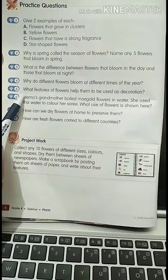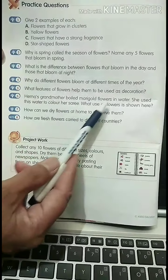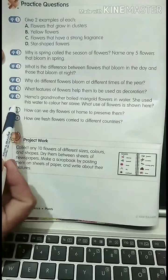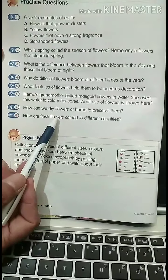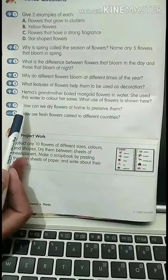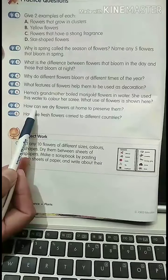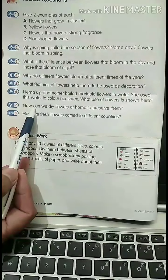Homework is do practice question number 5 and 6 of page number 6 in notebook. Question number 5 is what features of the flowers help them to be used as decoration? And question number 6 is Hema's grandmother boiled marigold flowers in water. She uses water to color her saree. What use of flowers is shown here?